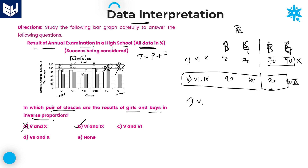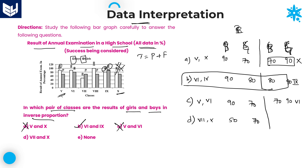Option C is class 5 and class 6. In class 5, boys are 90 and girls are 70. So in class 6, boys must be 70 and girls must be 90. But in class 6, boys are 90 — that is wrong, so eliminate option C. Option D is class 7 and class 10. In class 7, boys and girls are 50 and 70. In class 10, the values would need to be 70 and 50, but they are 80 and 70 — so eliminate option D.